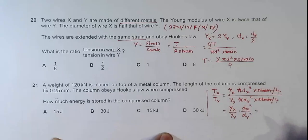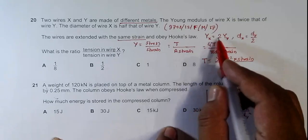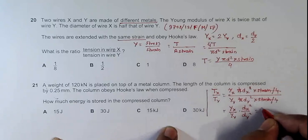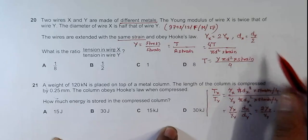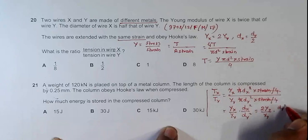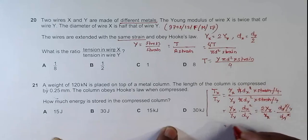That equals: Yx is 2Yy, so we have 2Yy over Yy. And Dx is Dy over 2, so Dx squared equals Dy squared over 4. Then Dy squared cancels, and the Yy terms cancel.